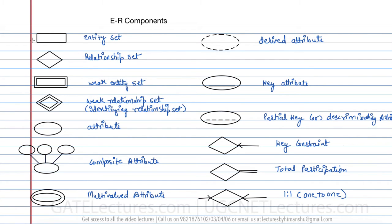The first is the entity set, which is represented by a rectangle. The second is the relationship set, which is represented by a diamond. A weak entity is represented by a rectangle inside a rectangle, and a weak relationship set is represented by a diamond inside a diamond.